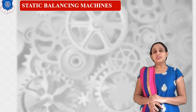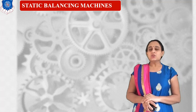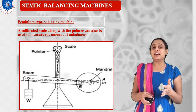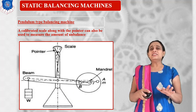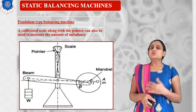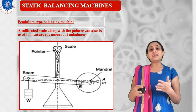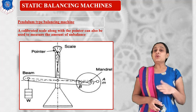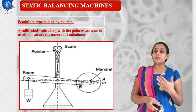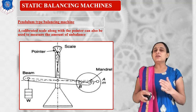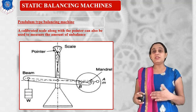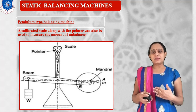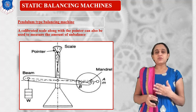First, our topic is the static balancing machine. As we see in our diagram, it is just like a weighing machine type of balancing machine — with the help of weight, we can balance any system. In a balancing system, what we often do is balance the system using a mass balancing approach. We need to balance the masses only.